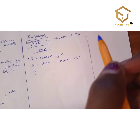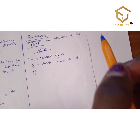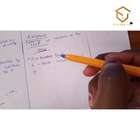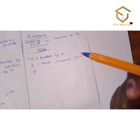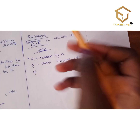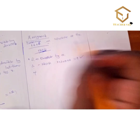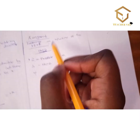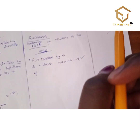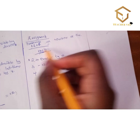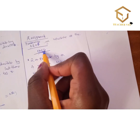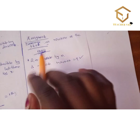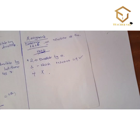The divisibility test of 4: we check the last two digits. For a number to be divisible by 4, the last two digits must be divisible by 4. The last two digits here are 06. Since 06 is not divisible by 4, the whole number is not divisible by 4.